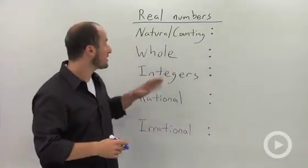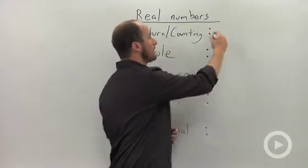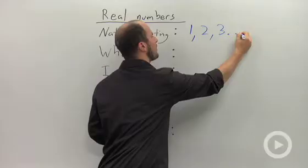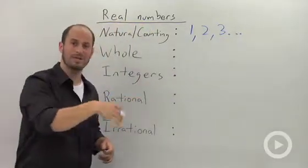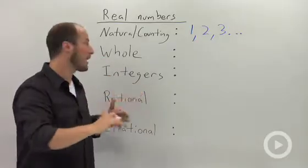Where I want to start is natural and counting numbers. Basically, these are the numbers 1, 2, 3, and so on - 842, any whole number larger than 0.